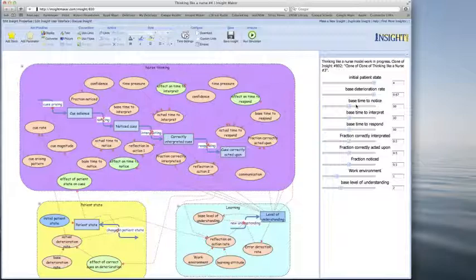We'll set the base time to notice, to interpret and to respond at the midpoint. So it's taking them about 30 minutes to notice, interpret and respond to the various cues. We'll set the fraction interpreted, acted upon and noticed at 50% as well. So they're only seeing about half of the cues, interpreting them and acting upon them. This is a fairly not well handled type scenario. We've got a work environment of 1, which is just a standard work environment and a base level of understanding of 2, which would be a second year nursing student.